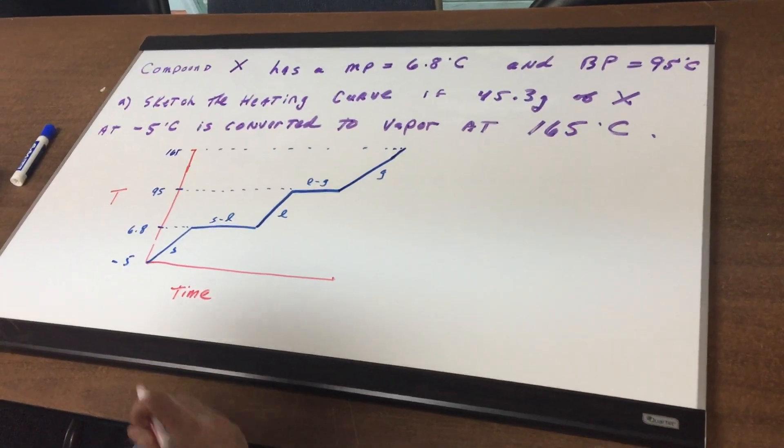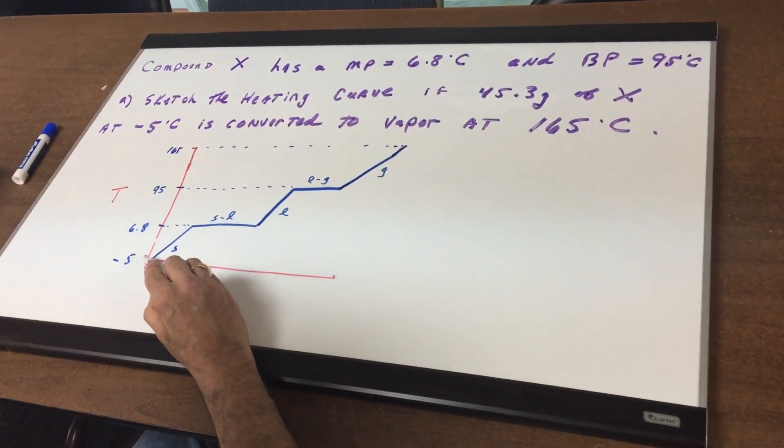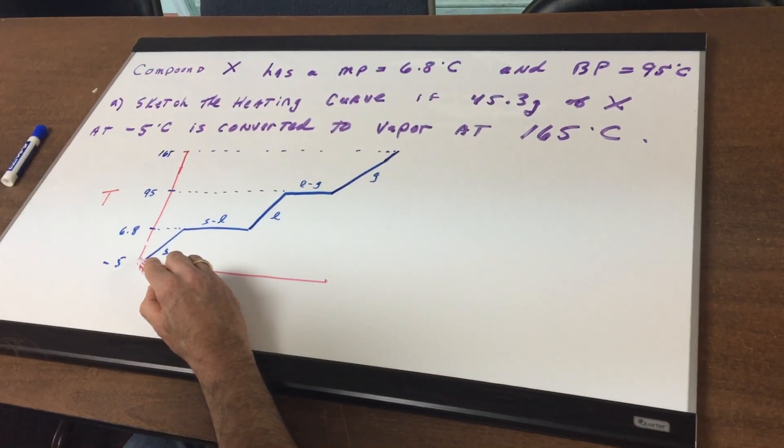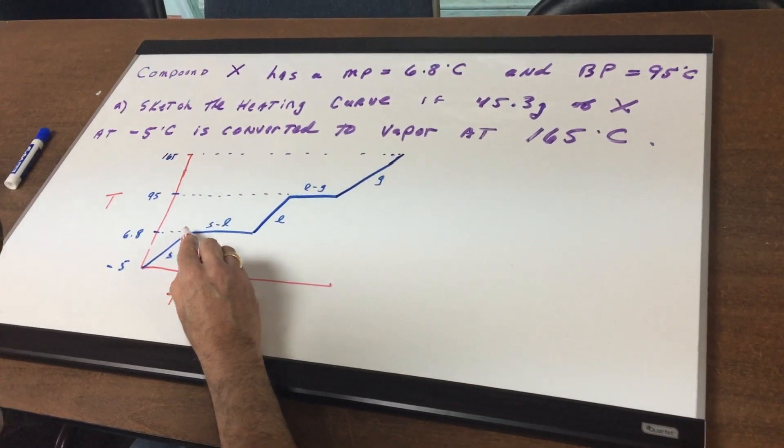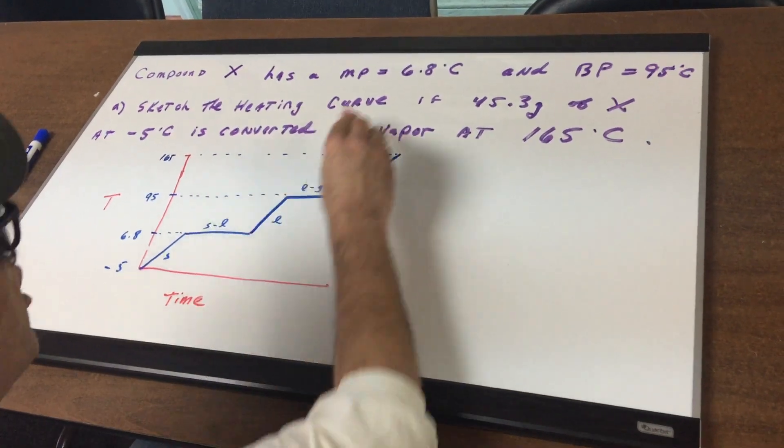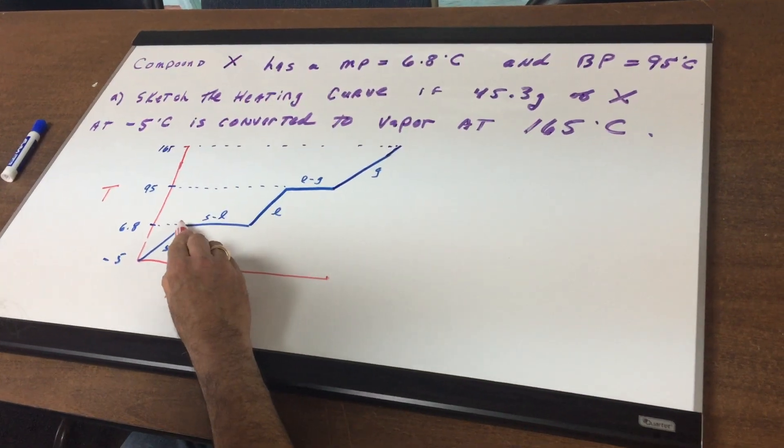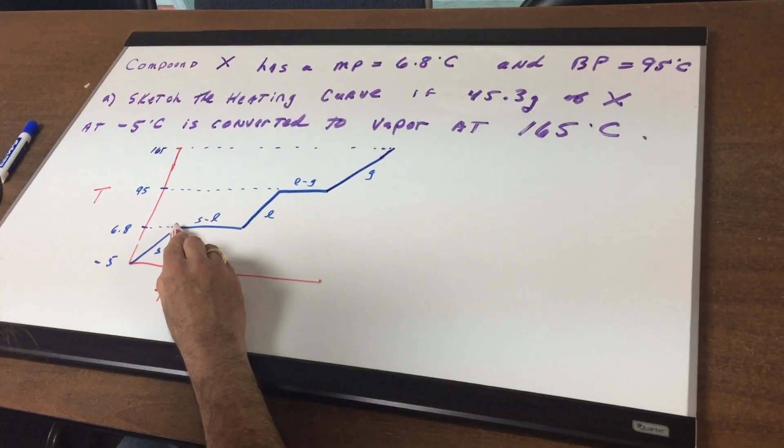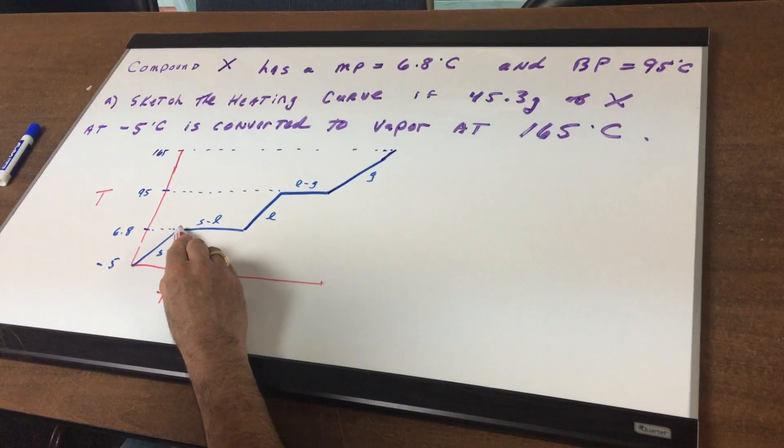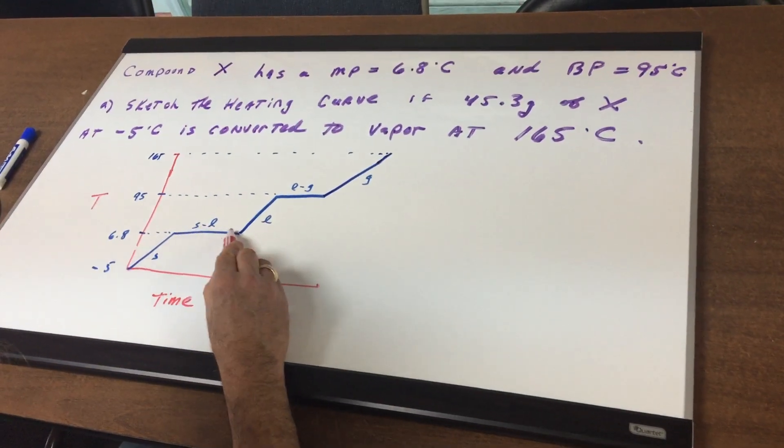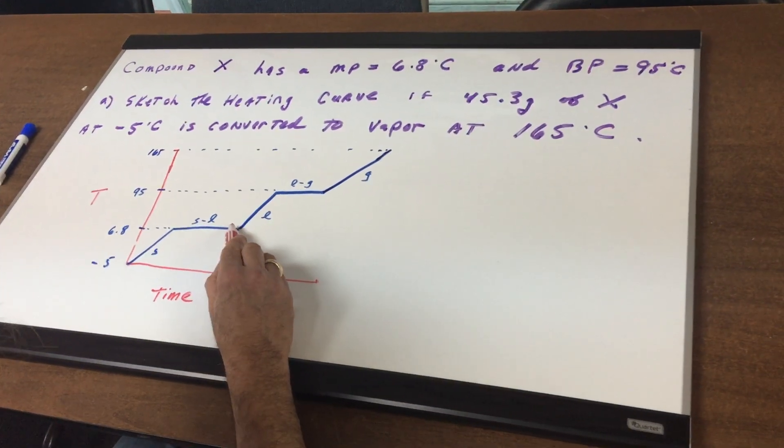So what we're going to do is we're going to start off at minus 5 degrees and we are going to go all the way up to the melting point which we learn is 6.8. At a melting point the temperature is constant. So therefore we level it off. Never forget during the phase change there's no change in temperature.